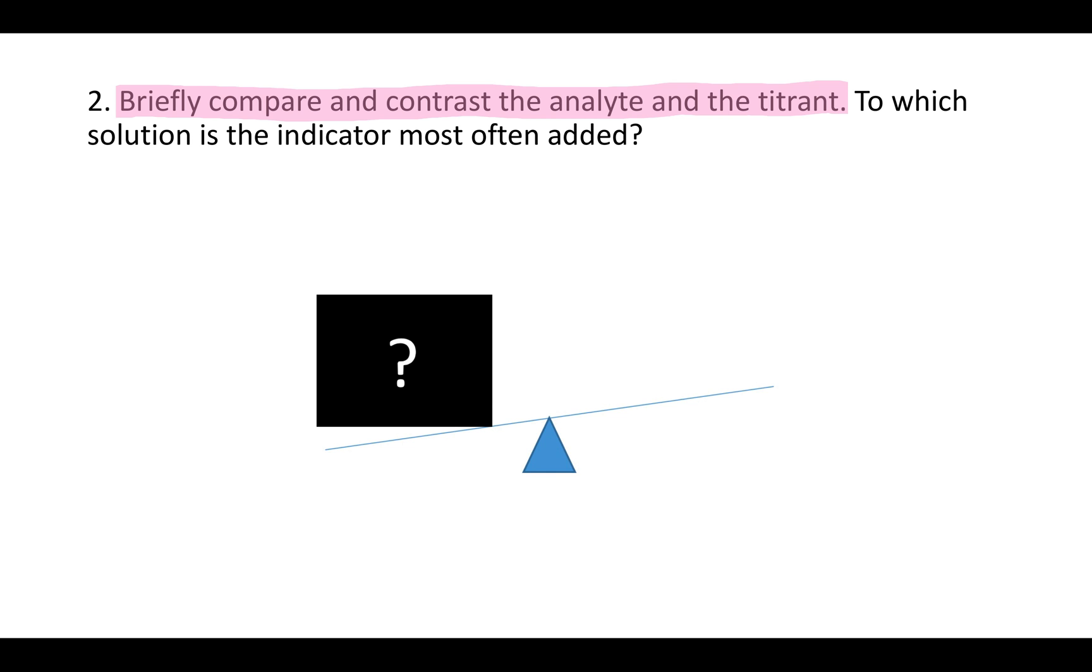In order to understand what a titration is, let's think about it in terms of a balance to see how this works. Let's say you had an unknown weight on one side of a balance. How could you figure out what that weight is? You can add known weights to the other side, and when they finally balance, now you know what your unknown is. Your unknown is whatever you added.